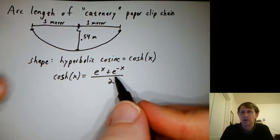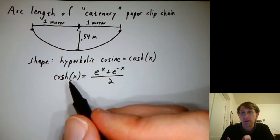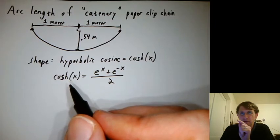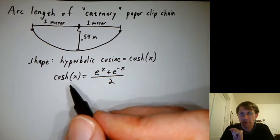You might be saying, if there's such a nice formula involving e to the x and e to the negative x for hyperbolic cosine, is there something like that for regular cosine? And there is. You just have to really imagine it. I'll tell you more about that later.